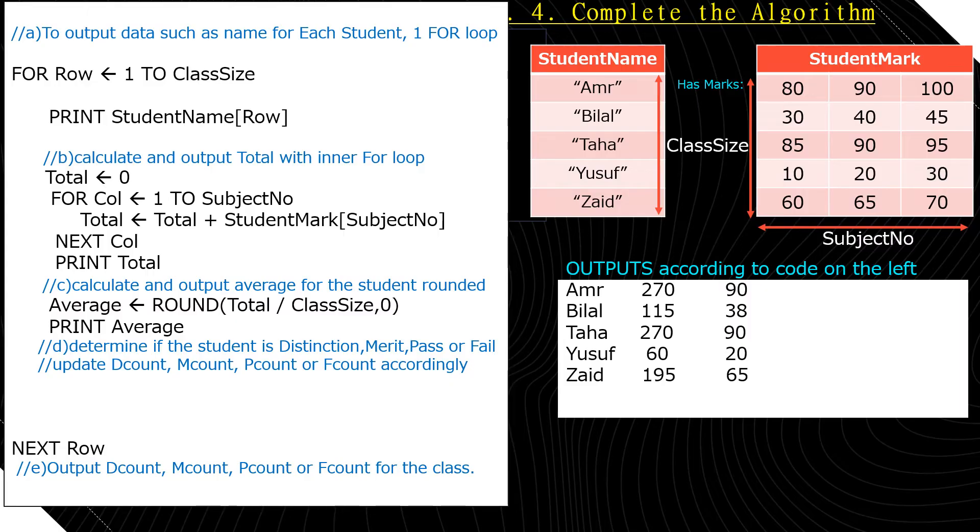Now we're going to go ahead to part C. Calculate and output the average for each student rounded to the nearest whole number. So the average is equal to, we're going to use the predefined function round, which takes the number that you want to round, so it's the total divided by the class size, comma, how many places you want to round to. In our case, we want zero decimal places. So this will calculate the average, and then we're going to print average. So after all these lines of code in black on the left, here are our outputs so far on the right.